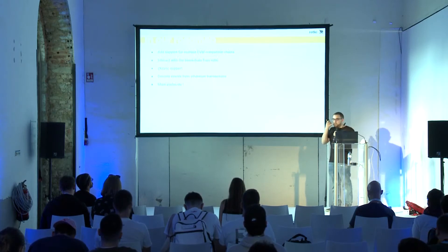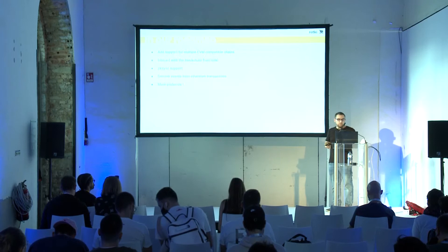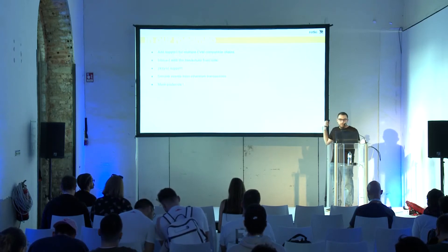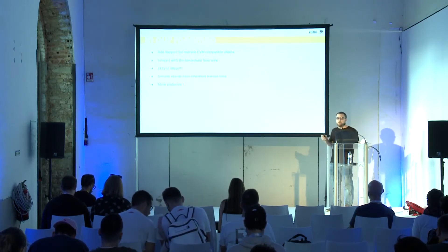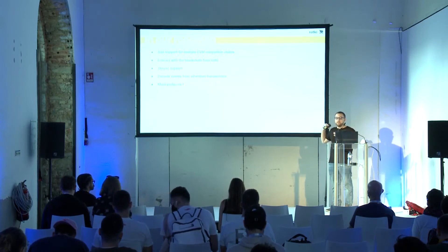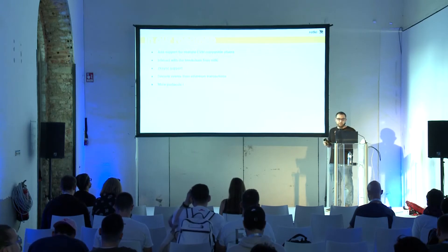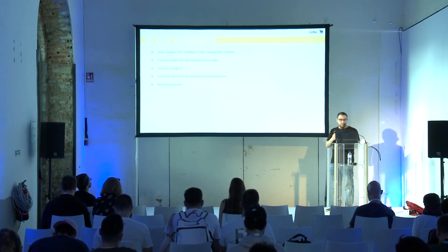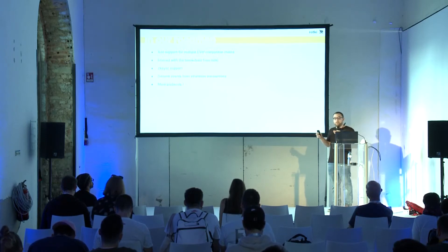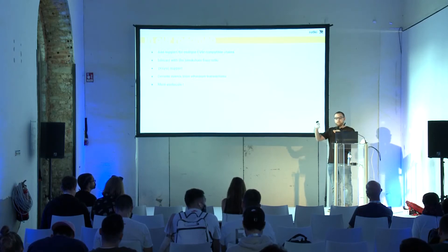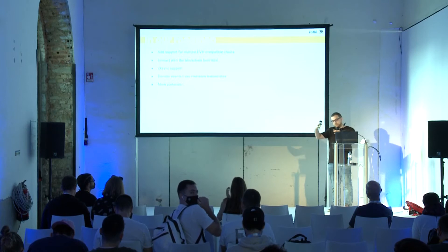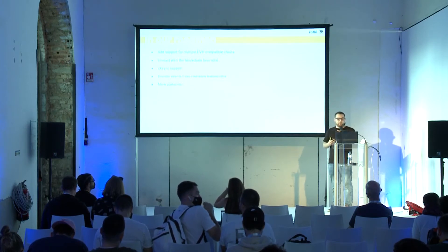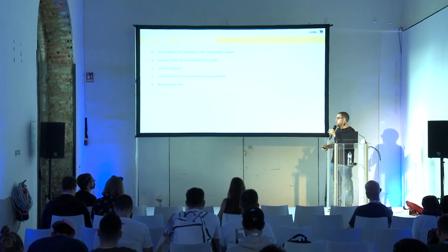In our roadmap, we have integration of more EVM-compatible chains, which we are working on right now. We also want to interact with the blockchain itself — right now the app retrieves information from it, but cannot output information to the blockchain, so that's something we want to do. Staking support is something Lefteris is doing right now. We also want to decode events from Ethereum transactions to properly track everything happening on chain, because currently we rely on other sources. And of course, adding more protocols and things to the app.